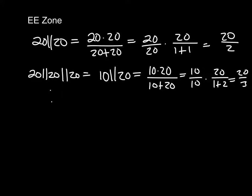If we carry this thing out N times, we're going to have 20 in parallel with 20 N times, being equal to 20 over N. So if I have N resistors in parallel, they all have the same resistance, the total resistance is just take one of the resistors, divide by N, the number of those resistors that you have.